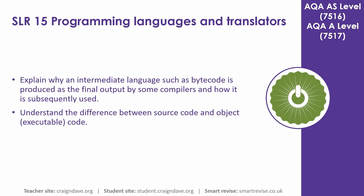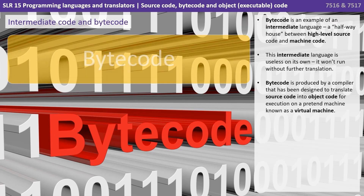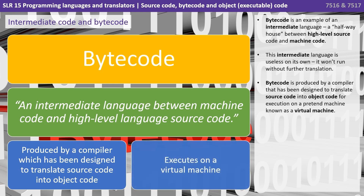Bytecode is an example of an intermediate language — a halfway house between high-level source code and machine code. This intermediate language is useless on its own; it won't run without further translation. Bytecode is produced by a compiler that's been designed to translate source code into object code for execution on a pretend machine known as a virtual machine.